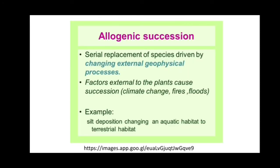Allogenic succession is the serial replacement of species driven by a change in external geographical processes. Factors external to the plant cause succession, such as climate change, fires, and floods. An example is silt deposition changing an aquatic habitat into a terrestrial habitat.